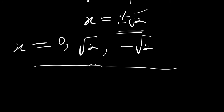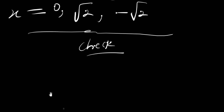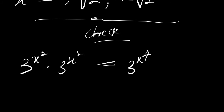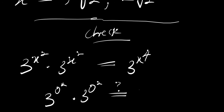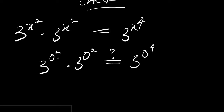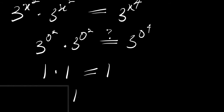Now let's go ahead and check. Starting with x equals 0: we have 3 power 0 squared times 3 power 0 squared equals 3 power 0 to the 4. That is true because 3 power 0 squared is 1, and 1 times 1 equals 1, and 3 power 0 is 1. So we have 1 equals 1.